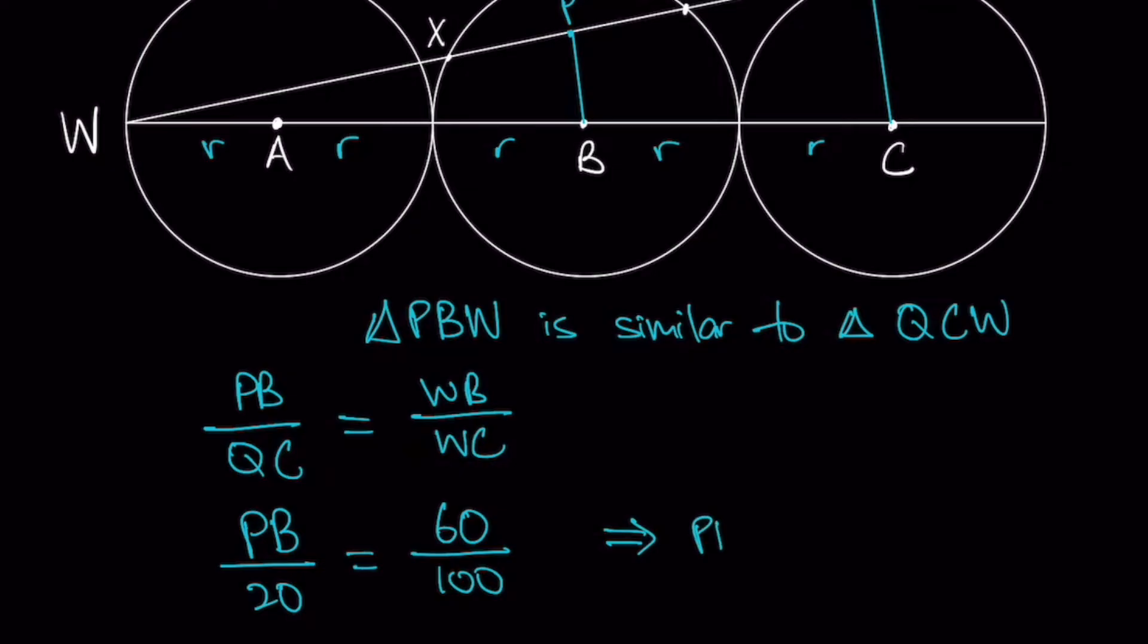Therefore, PB is equal to 60 over 100 times 20, we'll get 12. Next step.